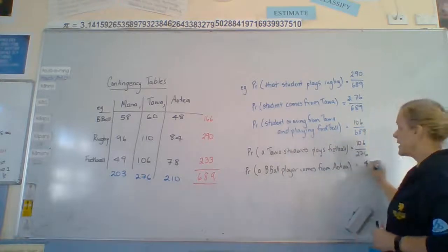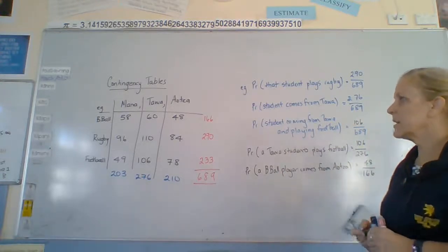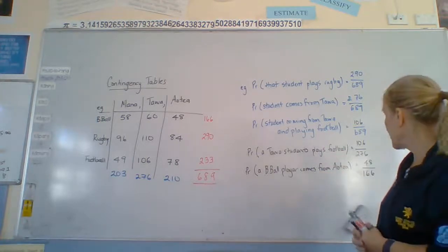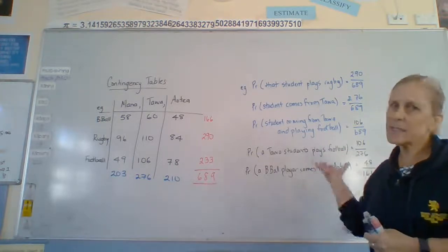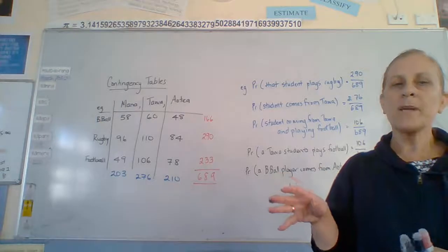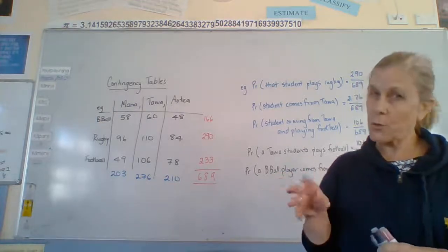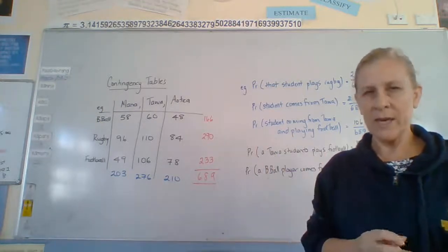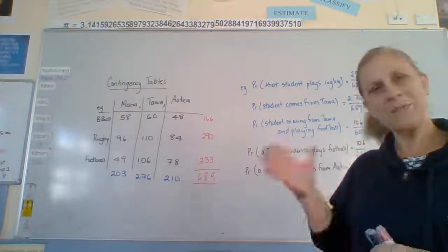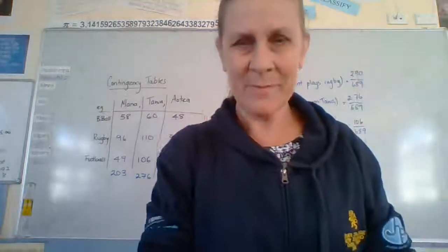So 48 out of 166. Alright, so we have to narrow it down each time. Okay, so that's contingency tables. Probably going to send you through a copy of some work to do. So have a go at that. And we'll see you soon.